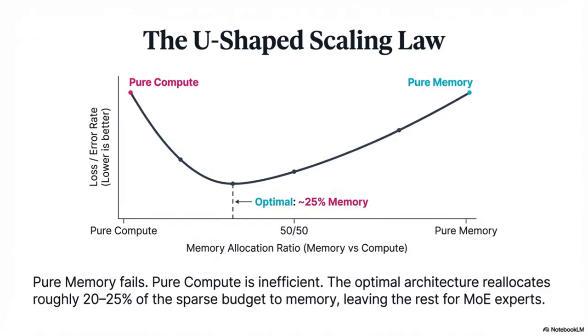Improvements on BBH, ARC Challenge, HumanEval, even math. The mechanism proposed is compelling: by offloading all that static knowledge reconstruction, conditional memory basically frees up the early layers — takes a burden off them.